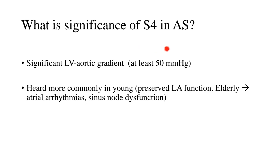What is the significance of S4 in aortic stenosis? Now, essentially, the presence of S4 means that the left ventricle to aortic gradient is quite significant. At least 50 millimeters of mercury is the gradient and some references mention at least 70 millimeters of mercury. Regardless, aortic stenosis is more than mild or more than moderate when you have an audible S4. Now, this S4 in case of aortic stenosis is heard more commonly in the young and not in the elderly. Why is that? Because the young patients have a preserved LA function. On the other hand, elderly patients usually suffer from atrial arrhythmias or they have associated sinus node dysfunction as a result of which the A wave is not seen and you do not get an S4.